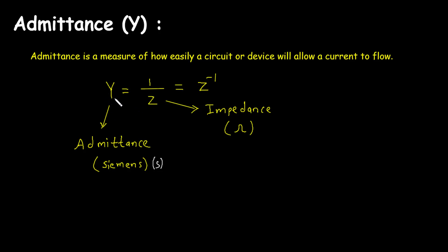Admittance is represented by capital Y and its unit is Siemens, represented by capital S. Z represents impedance and its unit is ohm. So we can say that admittance Y is equal to Z to the power minus 1, or Z inverse.